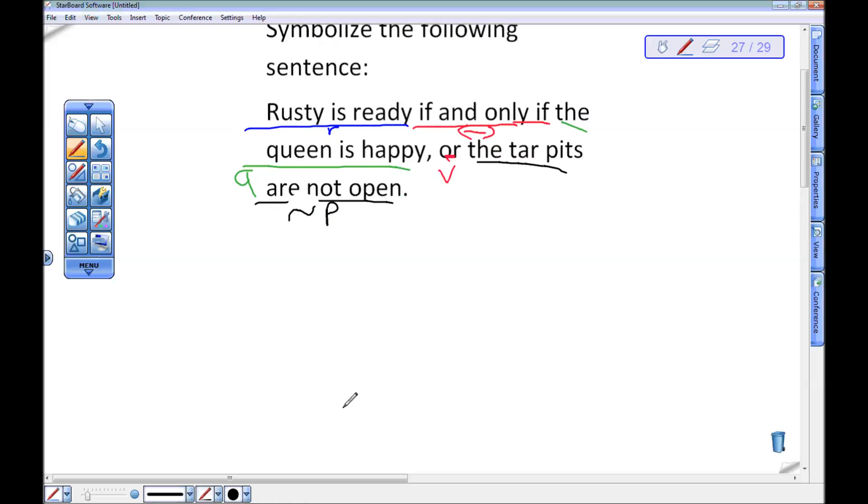So all in all I have Rusty is ready if and only if the queen is happy or the tar pits are not open. This time it is incorrect to not have parentheses because the way I have this written it looks like P or Q or not P go together. However, my statement said these go together because I have the comma after them. So in fact I need parentheses and I need them here. This has to be R if and only if Q in parentheses and then or not P.